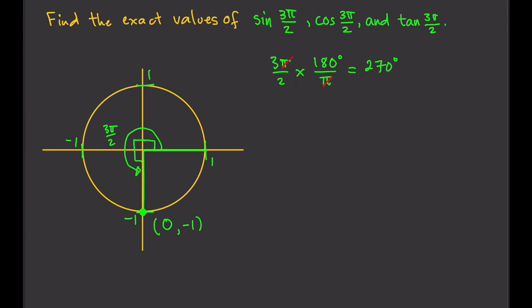So now that we have the coordinates, we can easily answer the question. Sine of 3π/2, remember that's equal to y. The y-coordinate is negative 1, so that's negative 1. Cosine of 3π/2 is equal to x. X is 0, so that's 0.